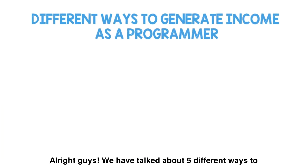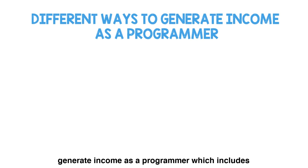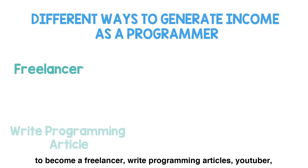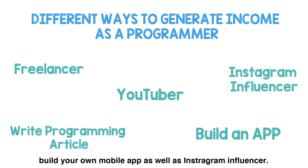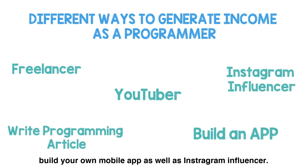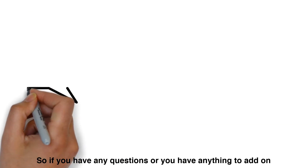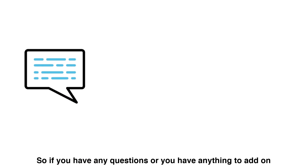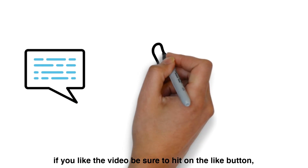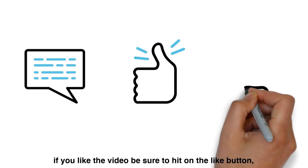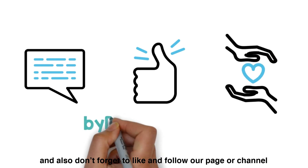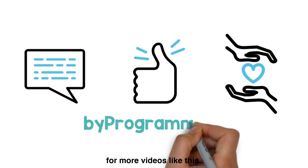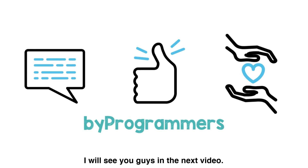Alright guys, we have talked about five different ways to generate income as a programmer: become a freelancer, write programming articles, become a YouTuber, build your own mobile app, and become an Instagram influencer. If you have any questions or anything to add, please comment down below. If you liked the video, be sure to hit the like button, share it with your friends, and don't forget to follow our channel for more videos like this. I'll see you guys in the next video. Happy coding. Peace.